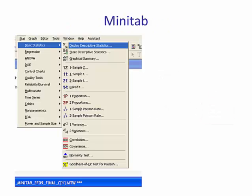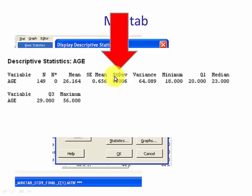To compute the standard deviation in Minitab, we go to stat, basic statistics, display descriptive statistics. We choose our variable, and in the session window this STDEV is short for standard deviation.